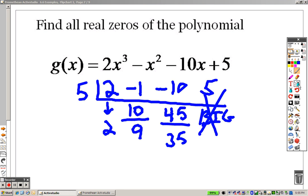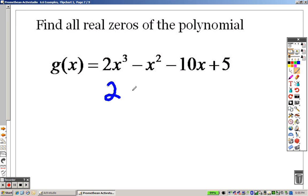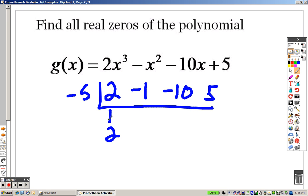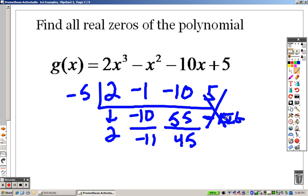So moving on to negative 5. So 2, negative 1, negative 10, 5, right? 10, negative 5. Bring down the 2, that gives me a negative 10. Add them to get negative 11. That gives me a positive 55, which I add together to get 45. When I multiply, I get a really large negative number that's big. And either way, when I add them, it's not going to be 0.